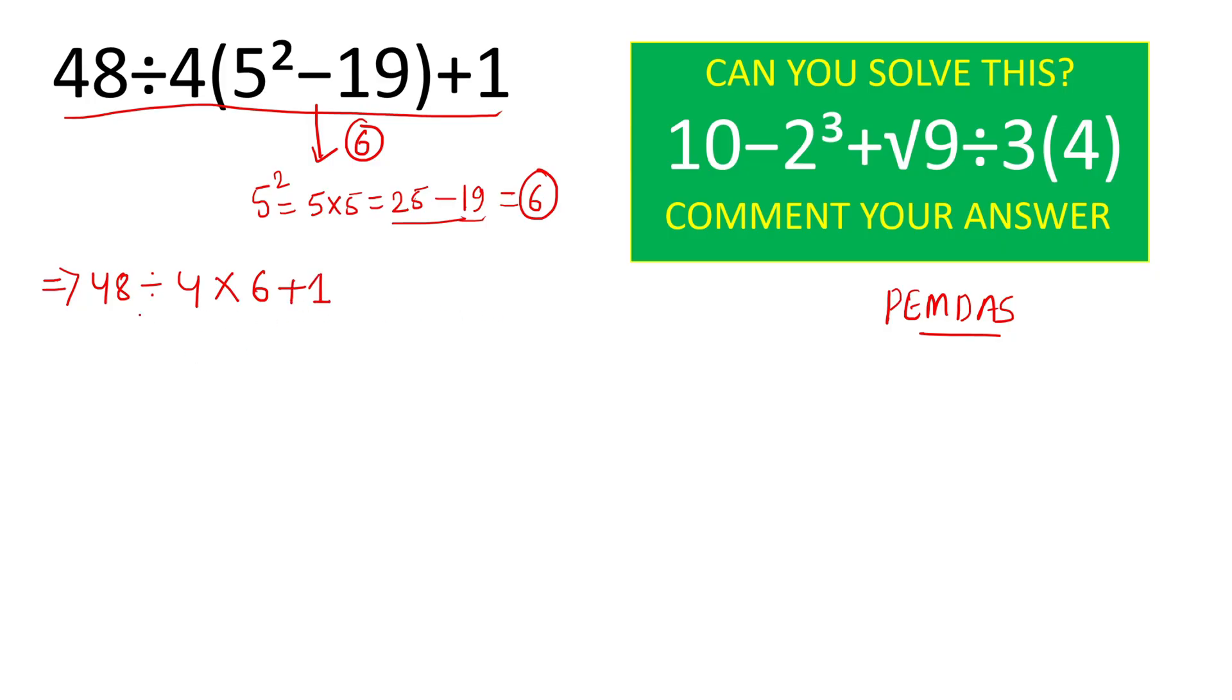Now multiplication and division has same precedence, so we will do left to right here and we will solve for this division part which is 48 divided by 4 and this will give result 12. So we will write 12 times 6 plus 1.